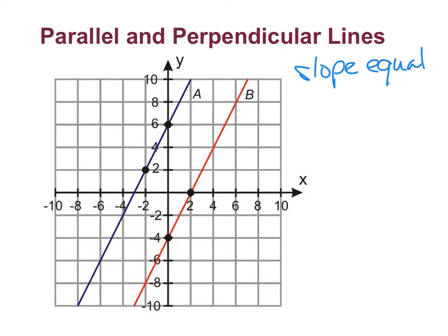So I have in this example two lines: line A and line B. They look like they're parallel, but I don't know for sure. The only way to know for sure is to determine the slope of each one.